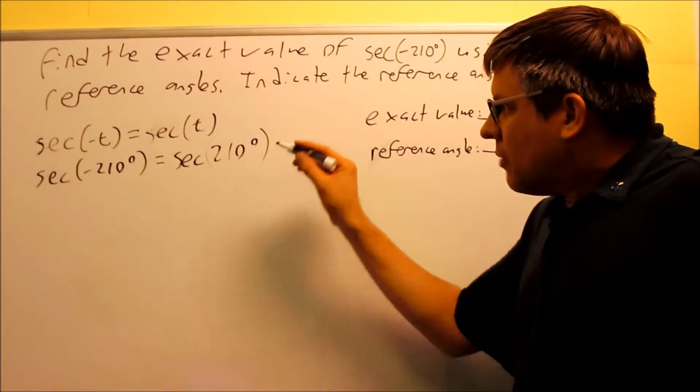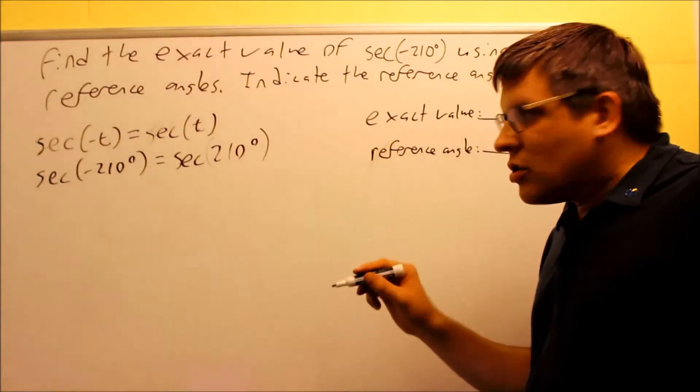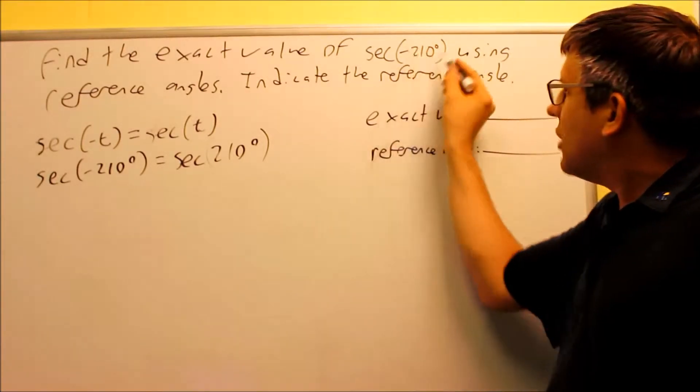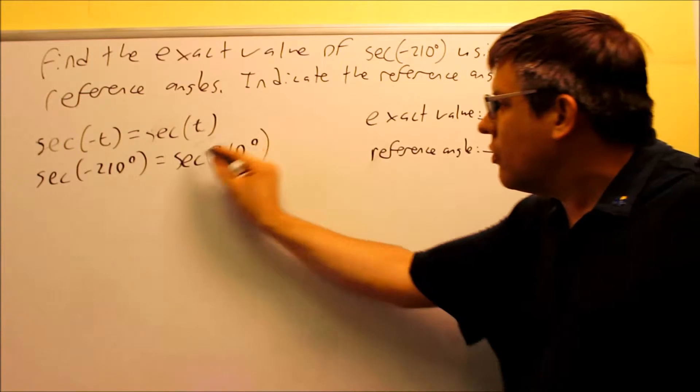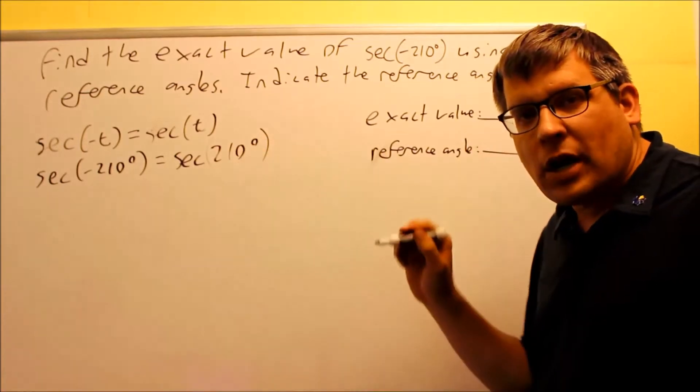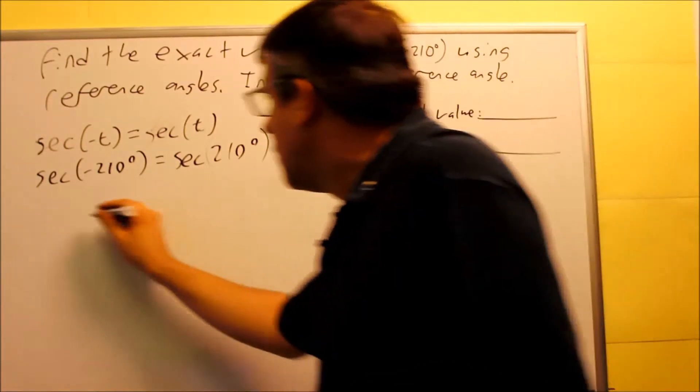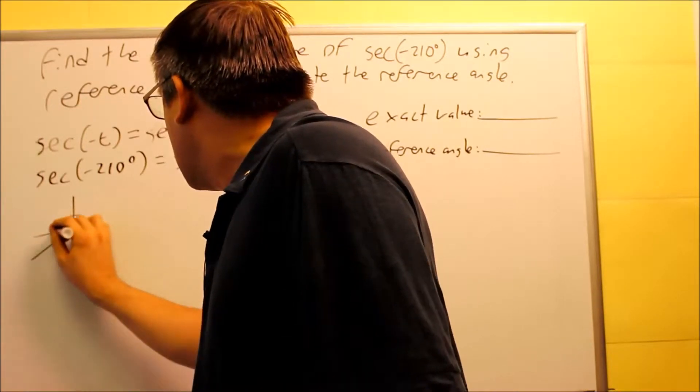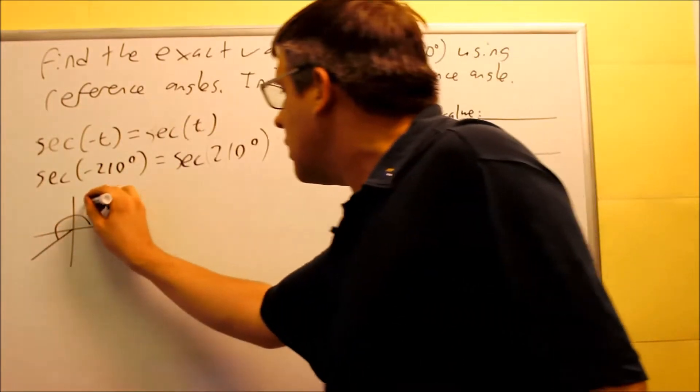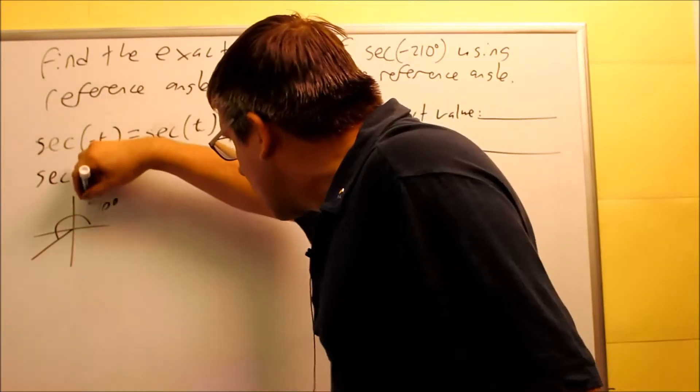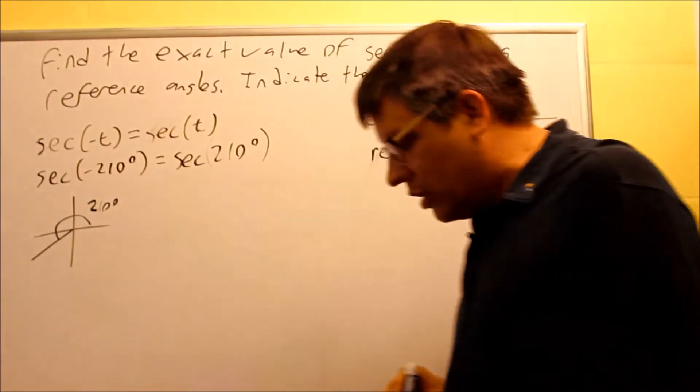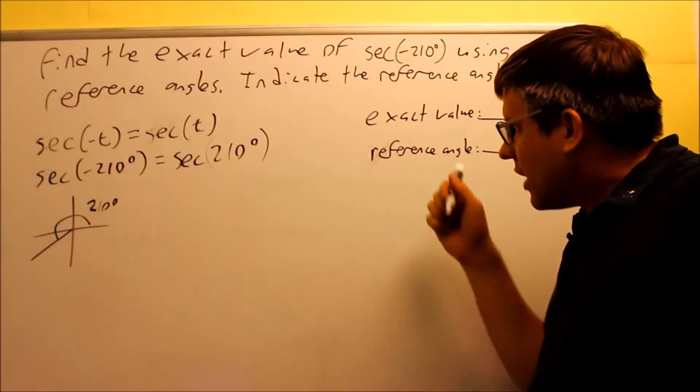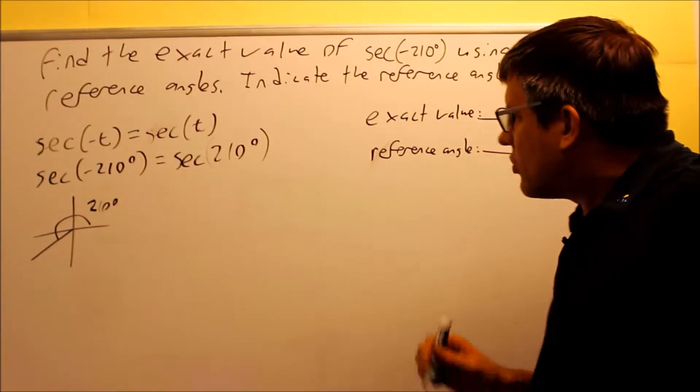Now, you still may have to draw this in standard position to find out what quadrant you're in to get the correct reference angle formula. So I am going to do that. I'm not going to do negative 210. I'm actually going to do this one now that I've rewritten it as a positive angle. So I'm going to rewrite this and draw this in standard position. 210 would be an angle that's drawn there. This would be positive 210 degrees and this would be written in the third quadrant. If you're in the third quadrant, now we know what formula to use for reference angle.